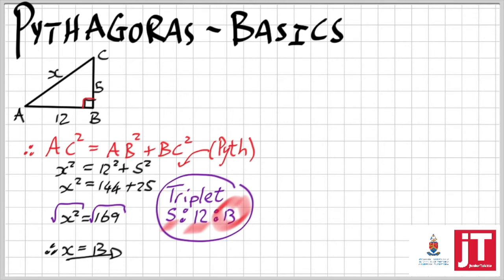There's actually a number of those, like 3, 4, 5, and also all the multiples of 3, 4, 5. So if I times everything by 2, I get 6, 8, 10. In other words, 3 squared plus 4 squared is equal to 5 squared. The same with 6 squared plus 8 squared is equal to 10 squared.